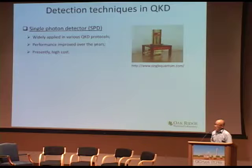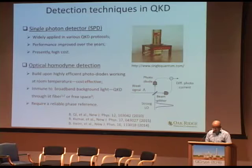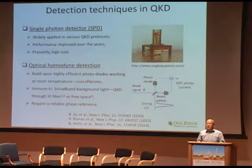Today, two types of detection technology have been applied in QKD. The first one is single photon detector (SPD), and over the years the performance of SPD has been improved. However, it is still relatively expensive. Another detection scheme is optical homodyne detection, where the relatively weak quantum signal is interfered with a strong local oscillator at a beam splitter. The resulting interference signal is strong enough to be detected with a low-cost photodiode, resulting in a cost-effective QKD solution.